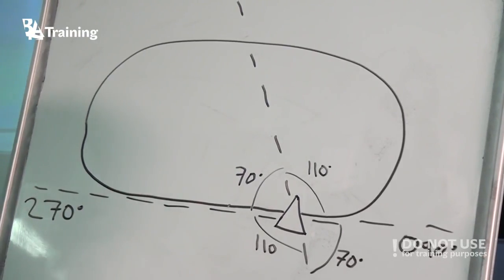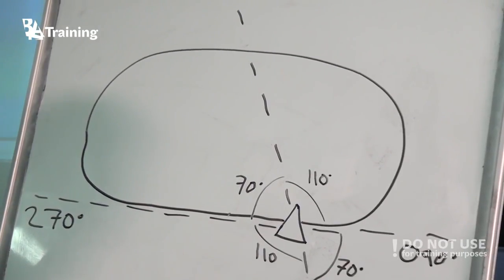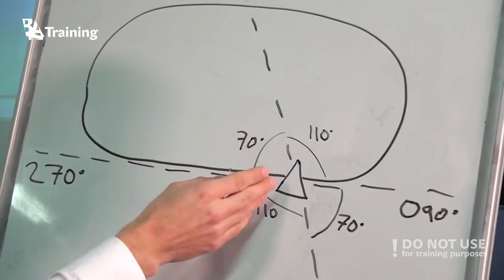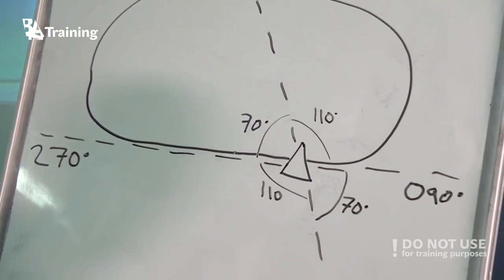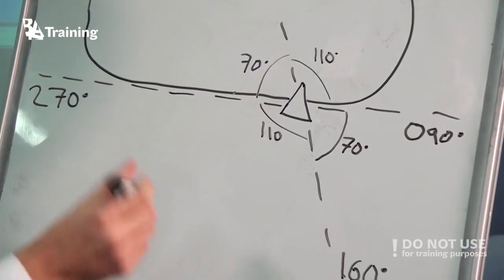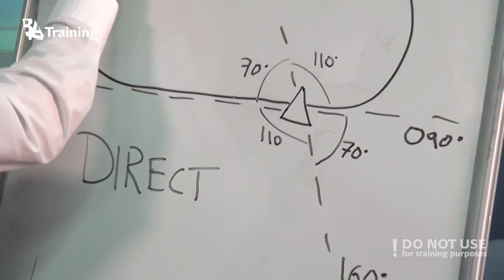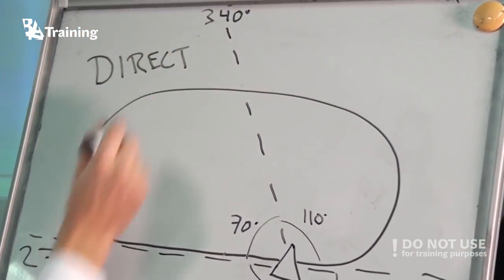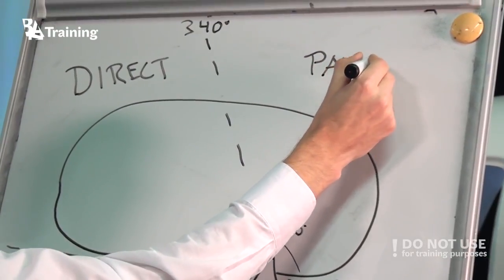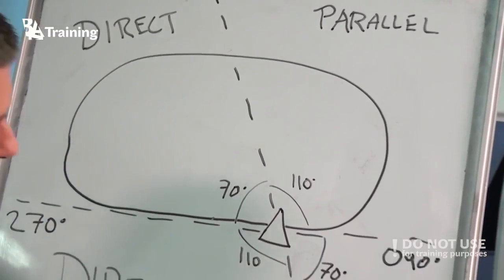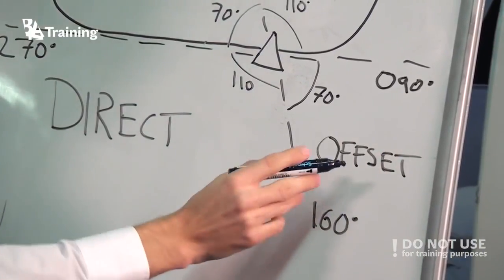Now we have to figure out where we are. For example, if you have a heading of 010, then you know that you have the fix in front of you — you are on radial 190 from the fix, so we are somewhere here. We can use direct entry for that position. This sector is direct, and this one is direct as well. This sector will be parallel, and this sector will be offset, also known as teardrop entry.